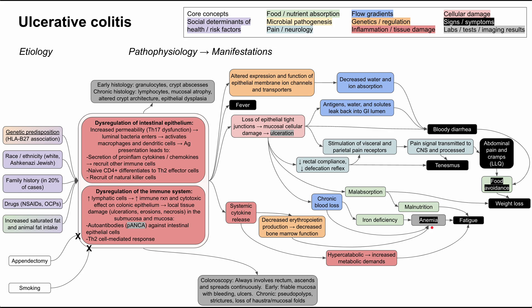During systemic inflammatory response, the body is in a hypercatabolic state with higher metabolic demands. Not only is the patient malnourished and malabsorbing nutrients, but the body is working harder due to inflammation, contributing to fatigue. Being chronically systemically inflamed is generally unpleasant and the CNS effects can result in anorexia, nausea, vomiting, and pain — all of which contribute to weight loss alongside the hypercatabolic state and malabsorption.